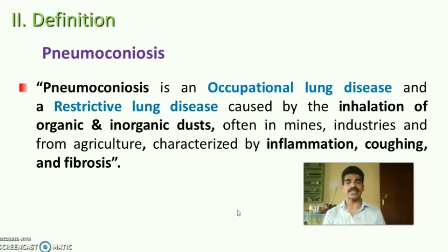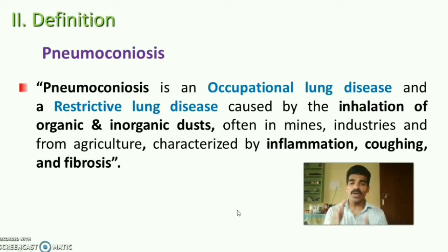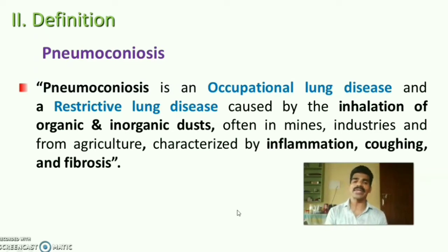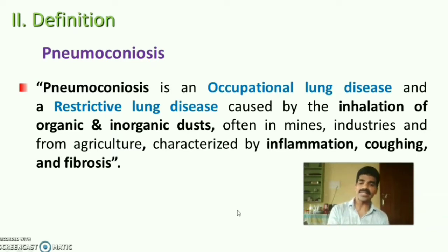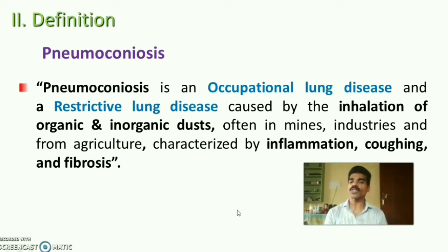Pneumoconiosis is an occupational lung disease, also known as restrictive lung disease, because it restricts the capacity of the lungs. It is caused by inhalation of both organic and inorganic dust from mines, industries, factories, and agricultural fields, and is characterized by inflammation, coughing, and later fibrosis of the lung.